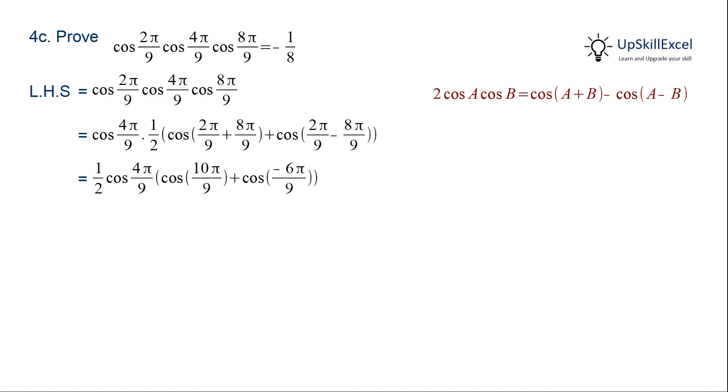Now, 10π/9 we can further simplify using π + π/9. We know that π + π/9 lies in the third quadrant and hence its value will be equal to -cos π/9. And cos(-2π/3) also lies in the third quadrant and can be simplified to -1/2.